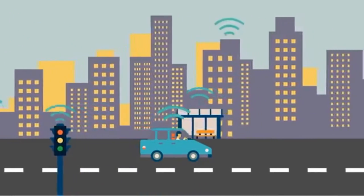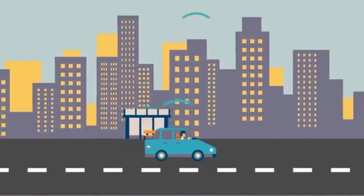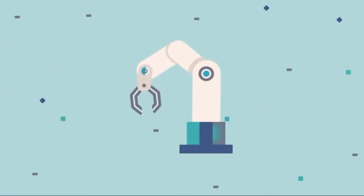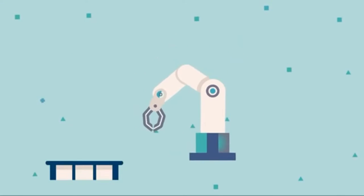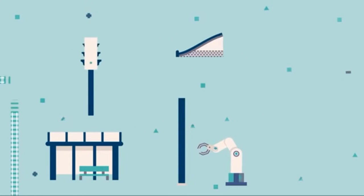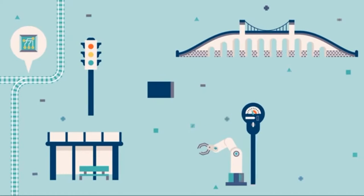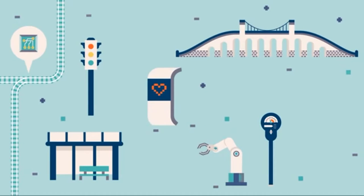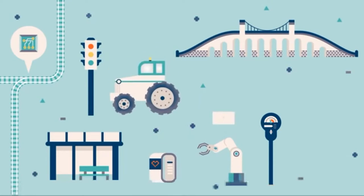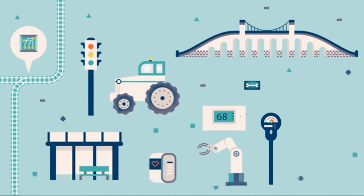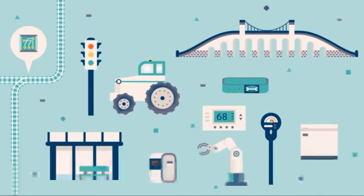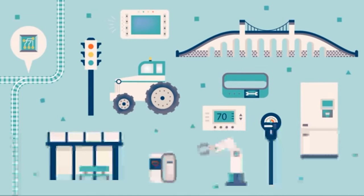And how do we put that information to work? Whether we're improving the production of a factory, giving city residents real-time updates on where to park, or monitoring our personal health, it's the common Internet of Things platform that brings diverse information together and provides the common language for devices and apps to communicate with each other.